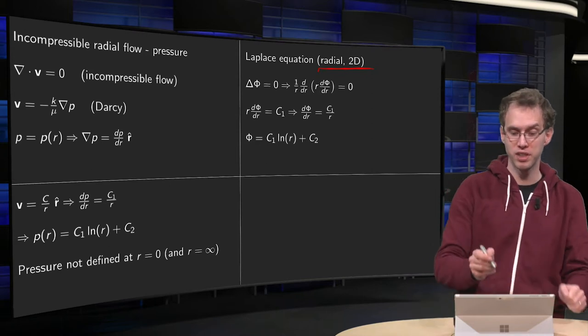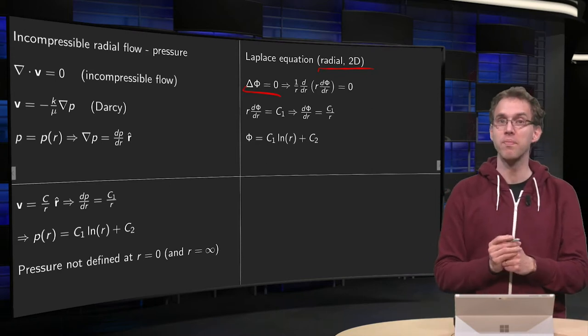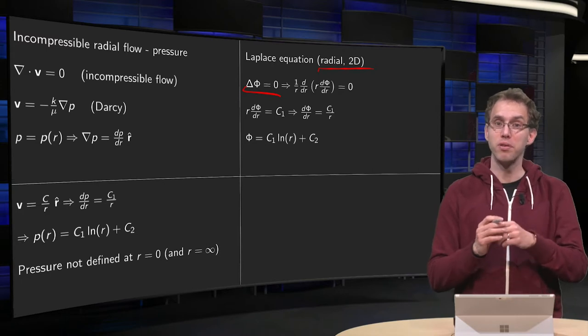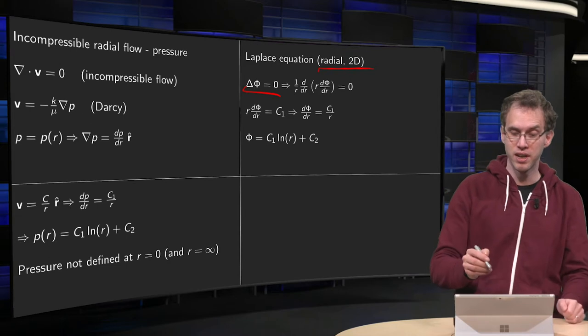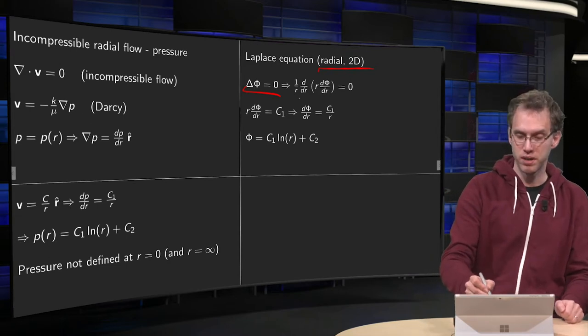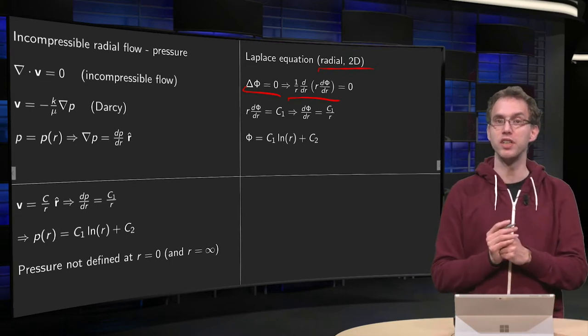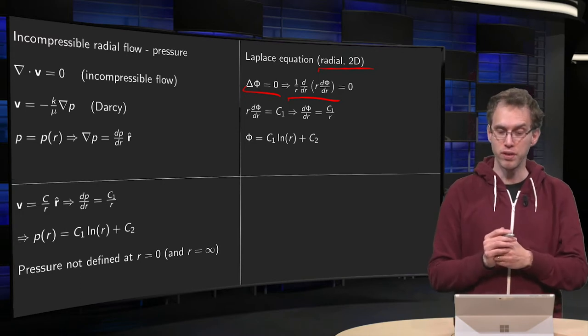So, what's the Laplace equation? Laplace phi equals zero. If you have a radial problem, fully radially symmetric, so only r dependence, then the Laplace operator reduces to this equation over here.